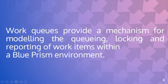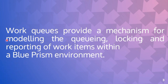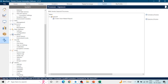With the help of Work Queue we can run the process on two bots as well, because one Excel sheet can't be handled by multiple bots directly. But once we load the data into the Work Queue, multiple bots can get the data from the Work Queue and process it. A queue contains any number of work items passed out to consuming processes in order of priority, then in the order they were added — it is based on first in, first out.